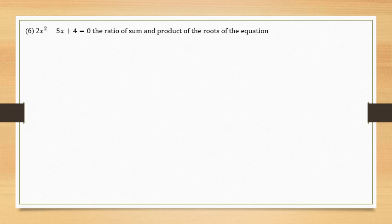2x square minus 5x plus 4 is equal to 0. The ratio of sum and product of the roots of the equation, we have to find one among the following options.